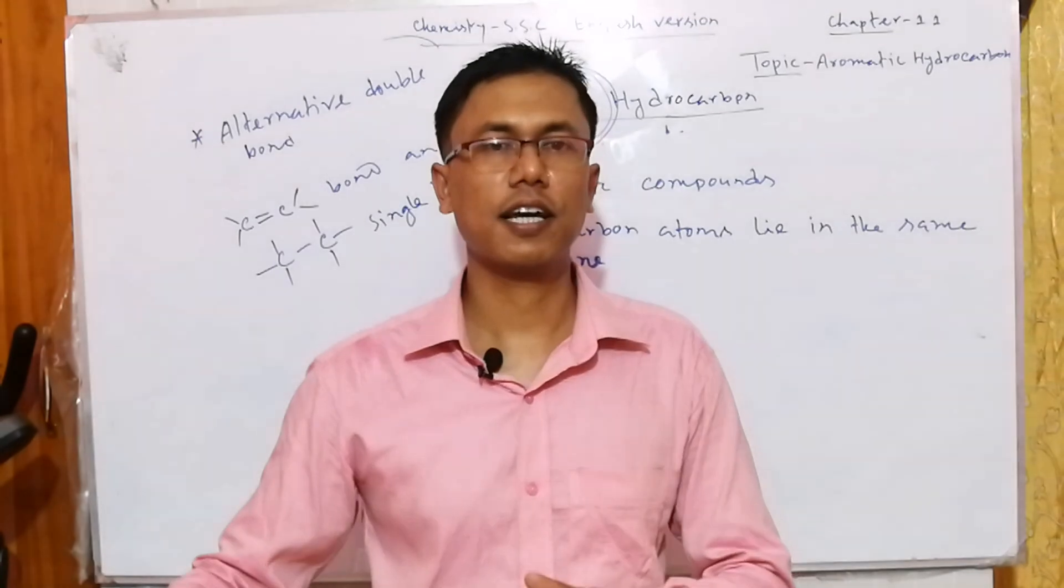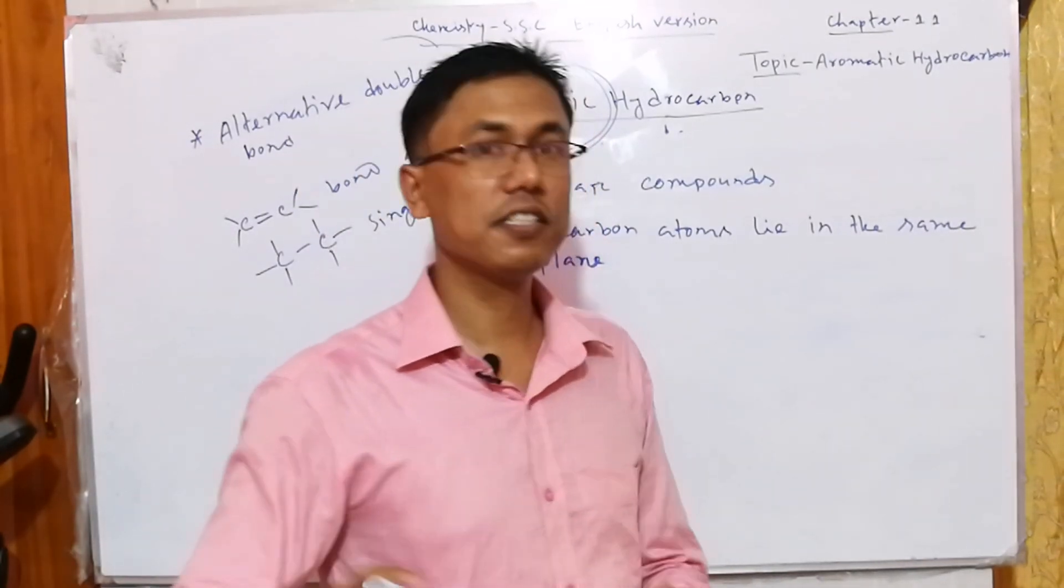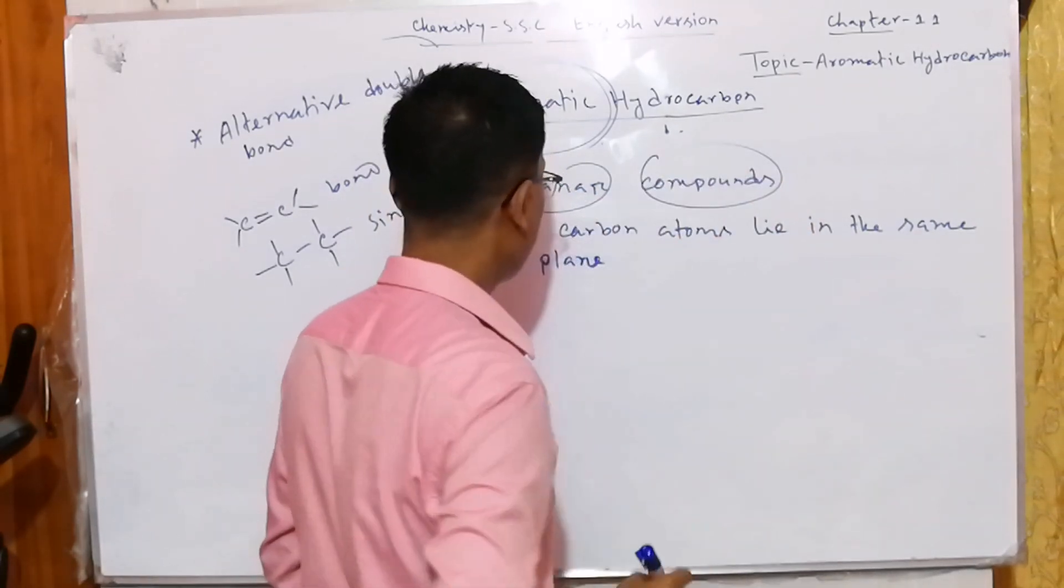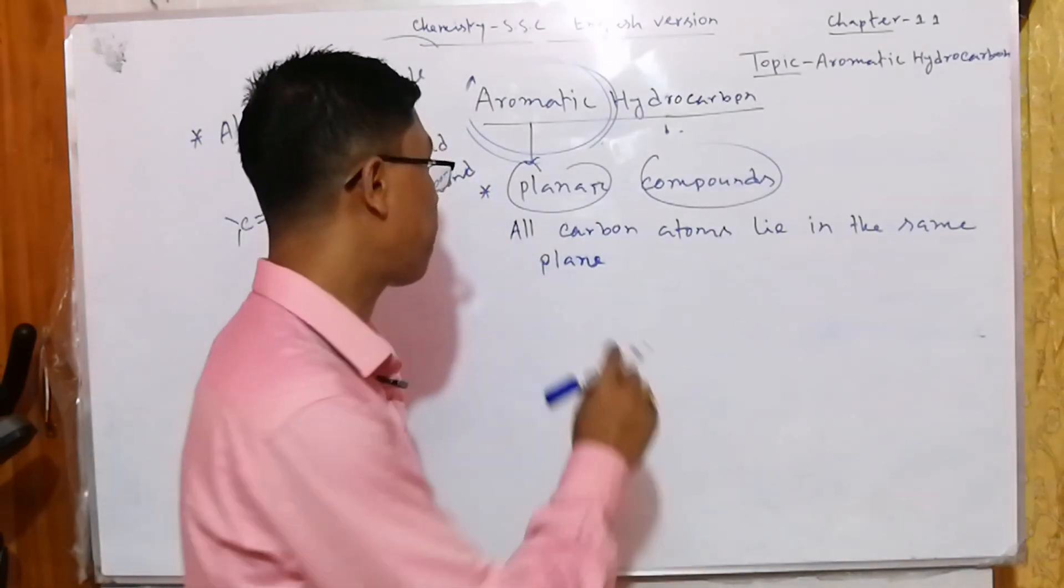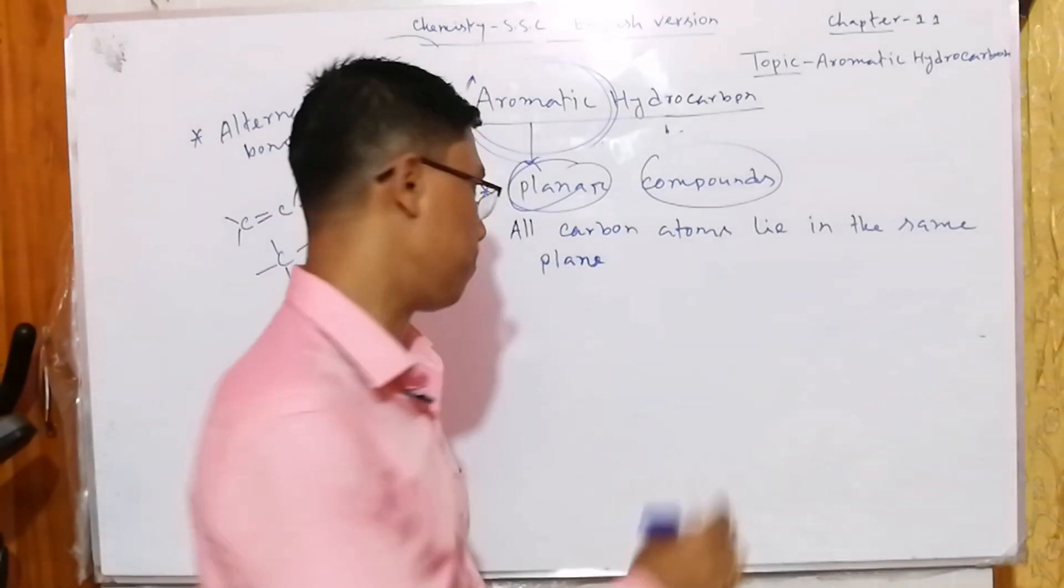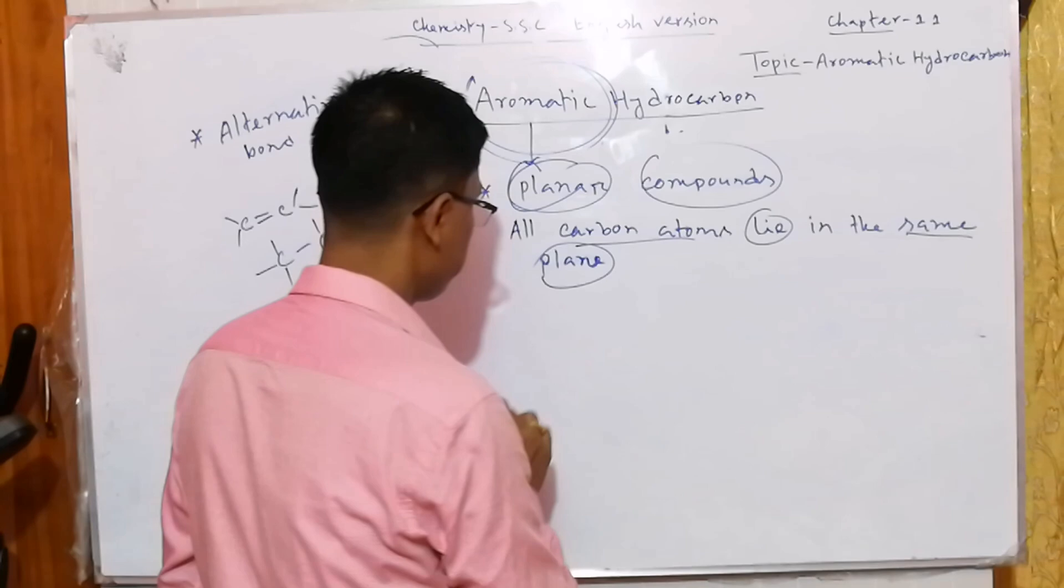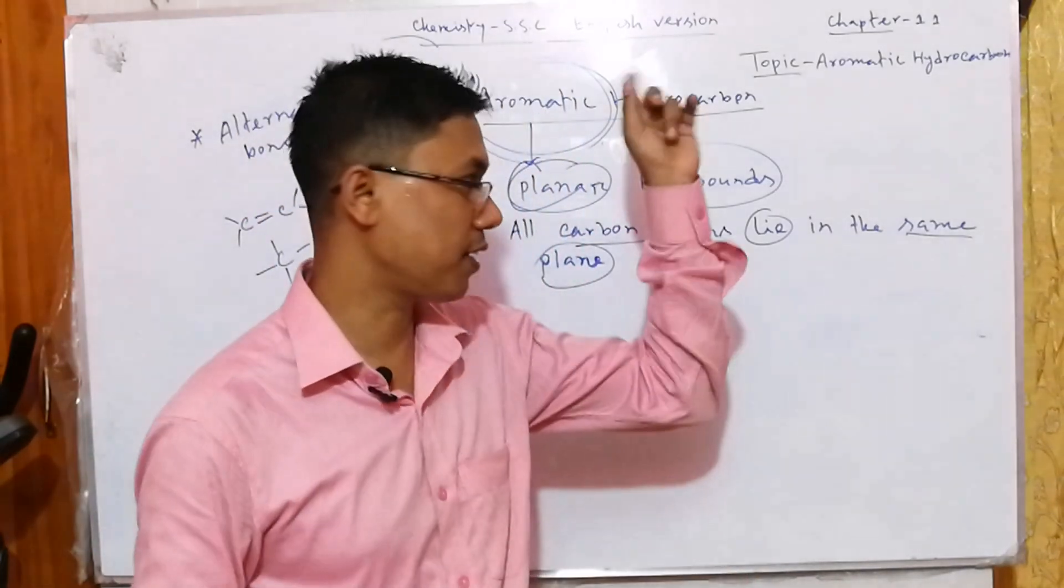The second characteristic of aromatic hydrocarbon is that it is a planar compound. What do you mean by planar compounds? A compound is said to be planar if all the carbon atoms lie in the same plane. You can see the structure of benzene as a planar compound on the screen.